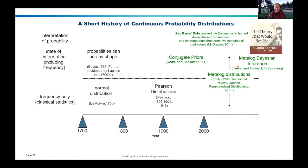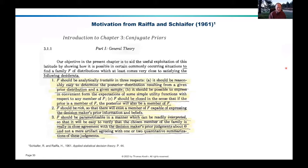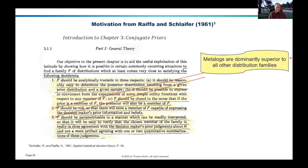That's what metalog Bayesian inference is — the Keelin and Howard paper, forthcoming. Here is a quote from Raiffa and Schlaifer on conjugate priors: desirable distributions should be analytically tractable — metalogs are; rich enough to express decision-maker prior beliefs — metalogs are; and parameterizable in a manner that can be readily interpreted. Metalogs are dominantly superior to other distribution families. If Raiffa and Schlaifer had had these in 1961, they would have done wonderful things with them, but metalogs were not invented until 50 years later.